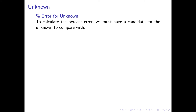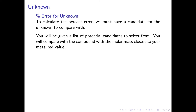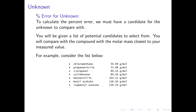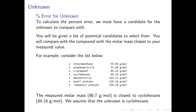Since we do not know what the unknown liquid is, we must first determine the candidate to compare with. You will be given a list of potential candidates to select from, and you will compare your results with the compound that has the molar mass closest to your measured value. For example, the measured molar mass of 86.7 grams per mole is closest to cyclohexane, which has a molar mass of 84.16 grams per mole. We therefore assume that the unknown is cyclohexane.